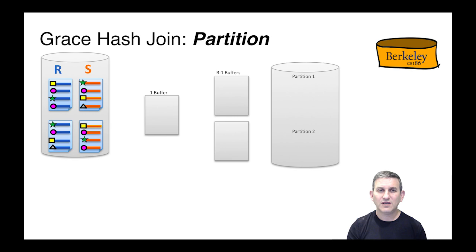In this example, we have R in blue, we have S in orange, and the join keys are represented by colored shapes. We're going to be matching up tuples based on their little shapes. We have B buffers of memory here in the middle. One buffer is being used for input and B minus one buffers for partitioning.